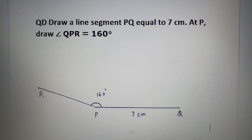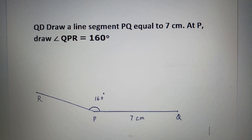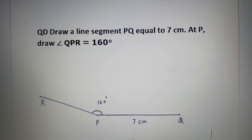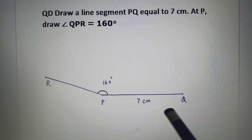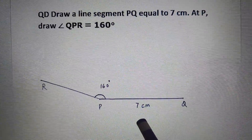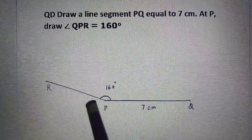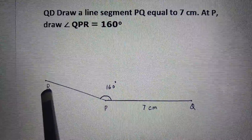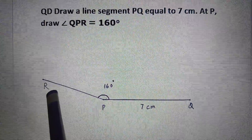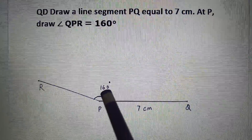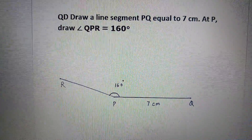Question D: Draw line segment PQ equal to 7 cm. At P, draw angle QPR equal to 160 degrees. First draw line segment PQ equal to 7 cm, keep the protractor at point P and mark the 160 degree point, join points P and R and you will get angle QPR equal to 160 degrees. Hope all the questions are clear to you now.